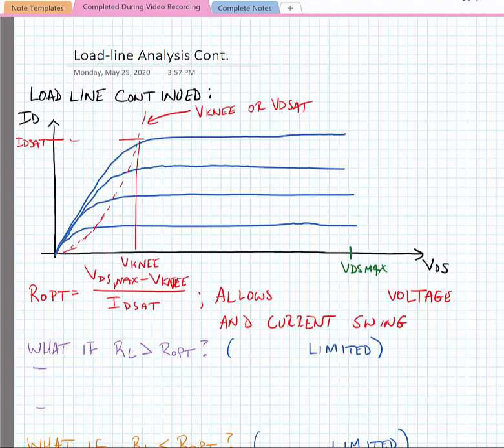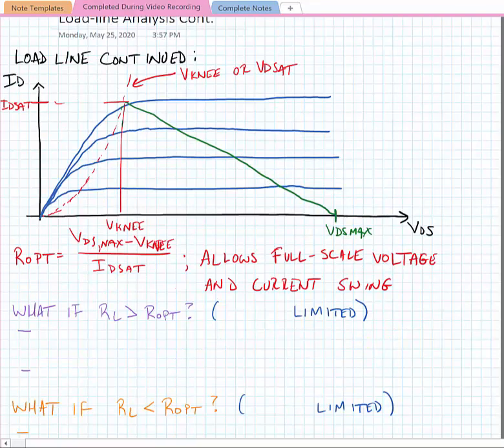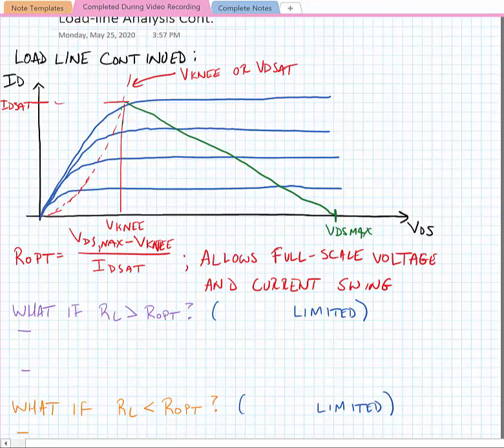This allows a full-scale voltage and current swing. It's natural to ask then what happens if R_L is greater than R_opt.